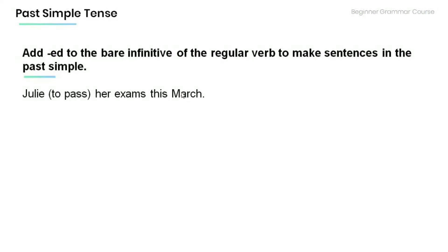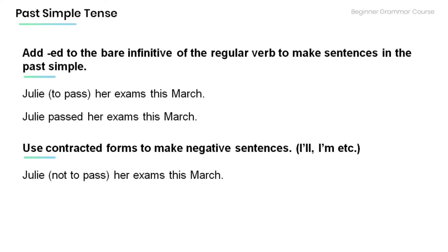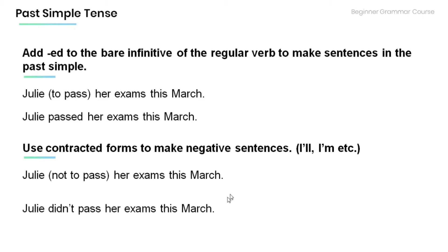Now let's review and practice. Read the following sentence and add -ed to the bare infinitive of the regular verb to make sentences in the past simple: 'Julie [to pass] her exam this March.' Remember that we use contracted forms to make negative sentences. The answer: 'Julie didn't pass her exam this March.'